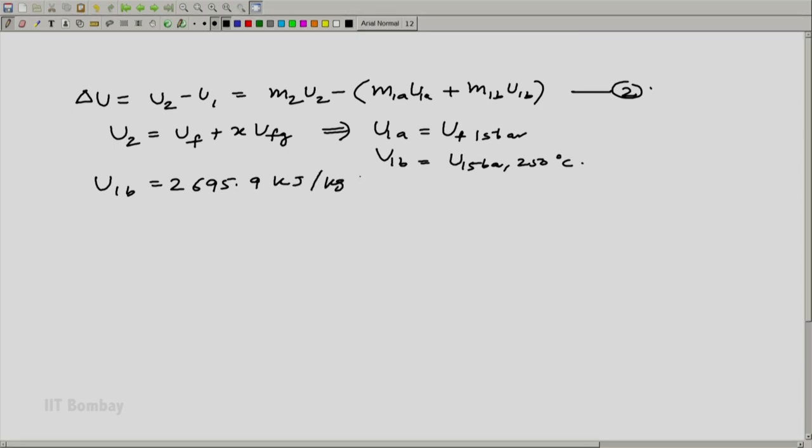I can do further calculations, get the values from table. I know uf is equal to 842.83 kilojoule per kg and ug is equal to 2593.4 kilojoule per kg. This is what values I will get from table 2.